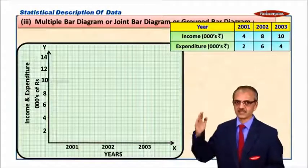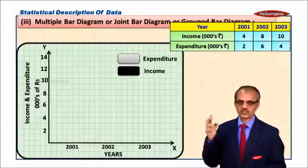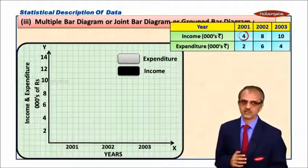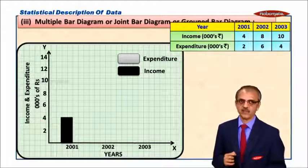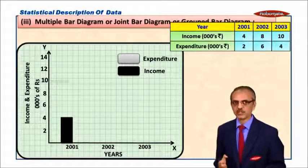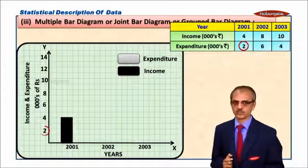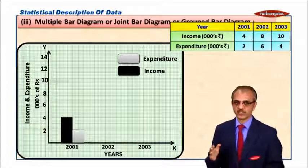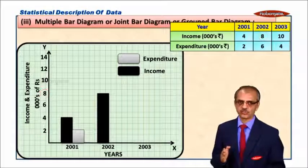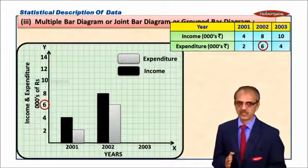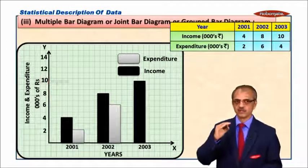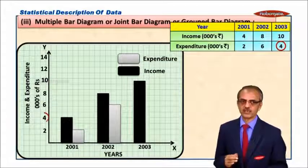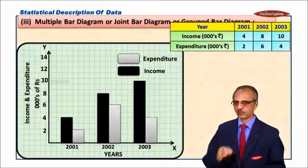So years on the x-axis, income and expenditure on y-axis. Draw in 2001, $4,000 is the income, and for the same year my expenditure is about $2,000. Similarly for 2002, we have $8,000 and $6,000, and for 2003 we have income of $10,000 and expenditure of $4,000.